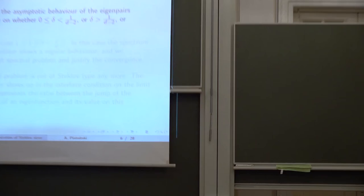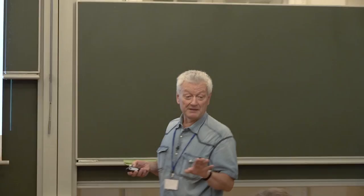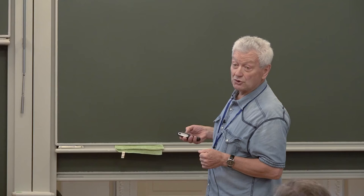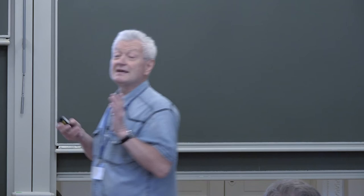There are three different cases. We have already decided delta should be non-negative. The subcritical case is when delta is between zero and one over d minus 2 (in the two-dimensional case delta may be any number). Then the critical case is when delta equals one over d minus 2, and the supercritical case is when delta is greater than one over d minus 2.